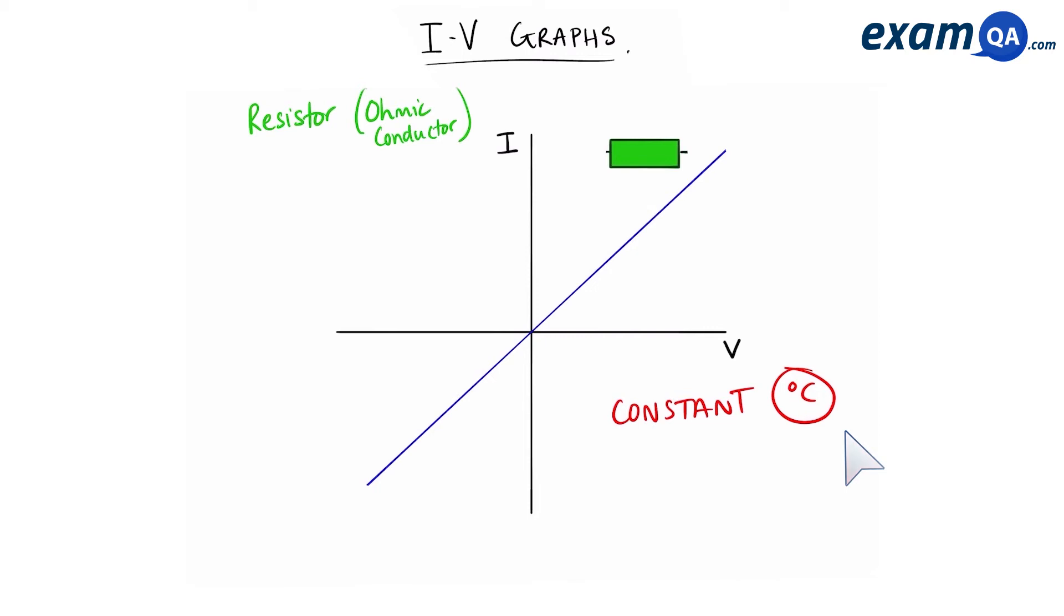Now you can work out resistance from the graph itself and this is quite interesting. So if you think about this we know that V equals IR. Now I want to show you how to work out resistance from the graph. So let's start off by writing down V equals IR. If you rearrange that that gives you R is V over I. Now let's look at our graph.